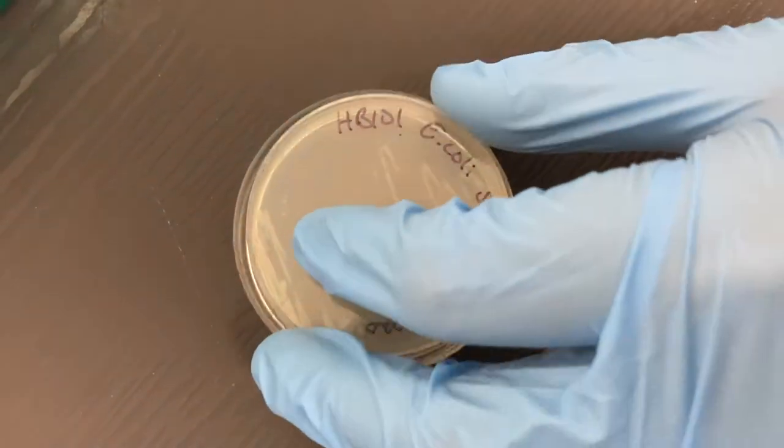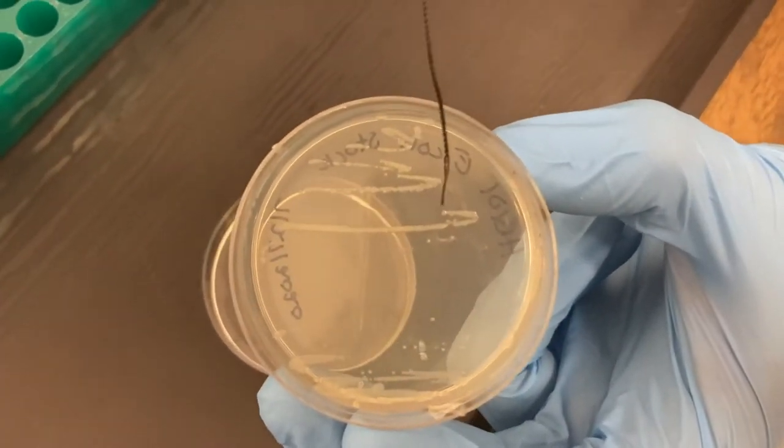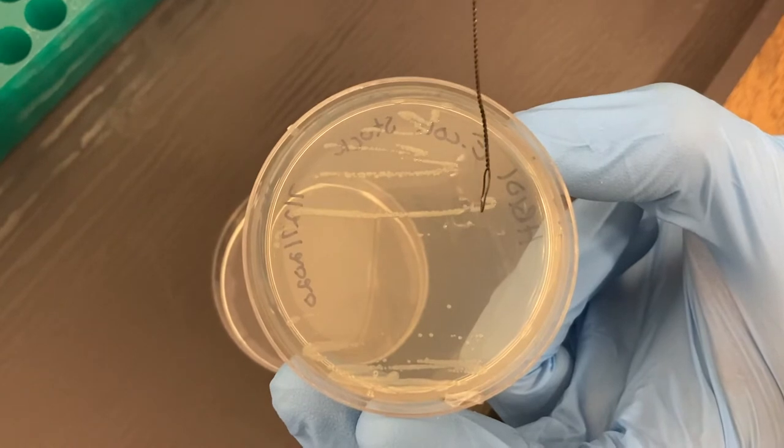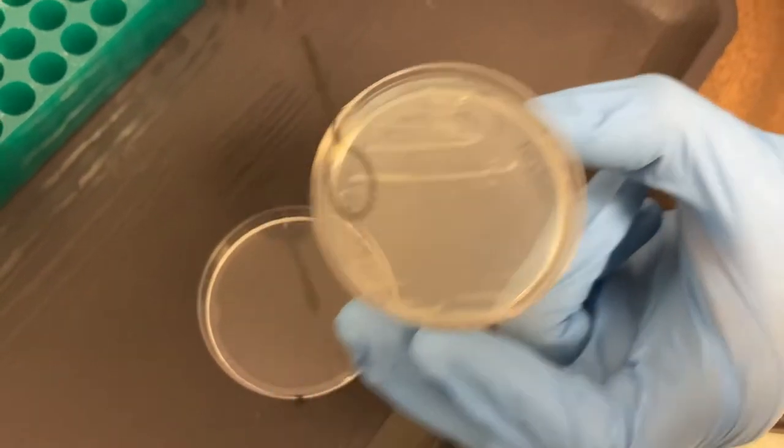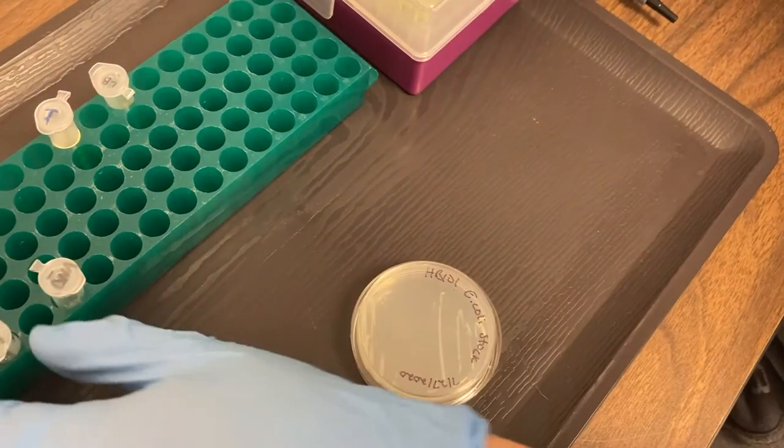Start with our stock of E. coli bacteria. This is what we're trying to get our plasmid into so that we can make the green fluorescent protein. We use this inoculating loop to swipe across the top of the agar, get a little bit of bacteria off there.